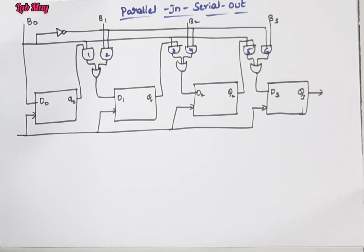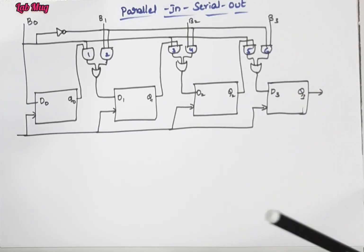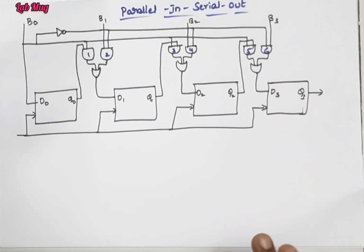Hi everyone. In the previous class, we covered serial in serial output and serial in parallel output shift registers — two types. So, here the topic we are going to see is the third type, that is parallel in serial out.